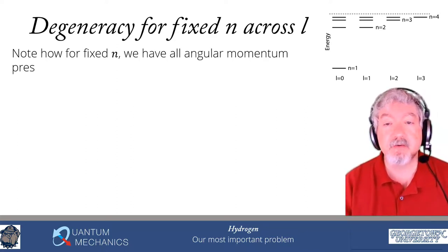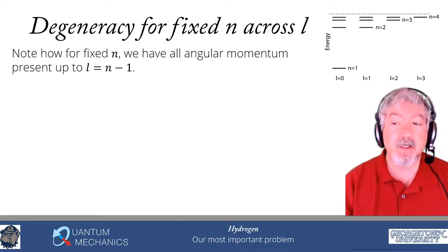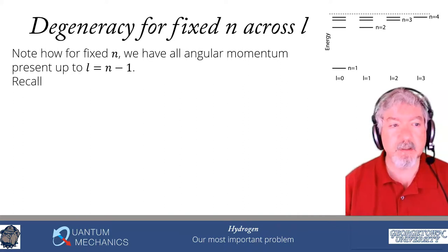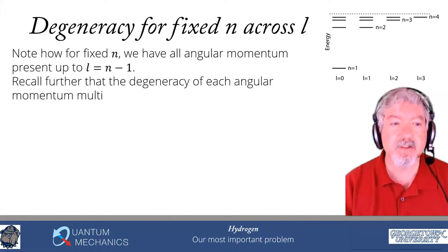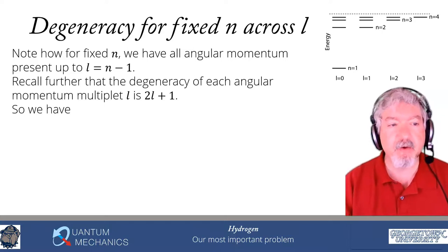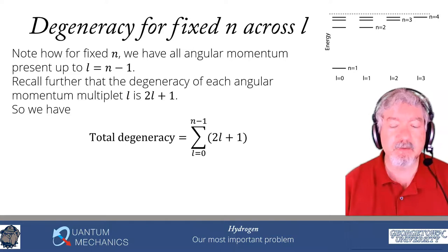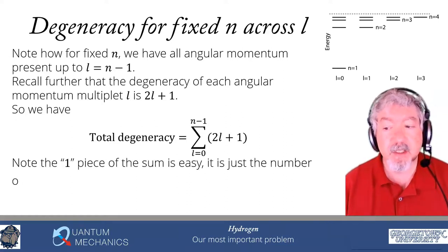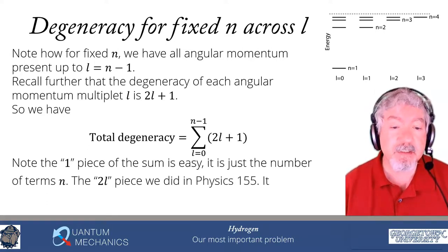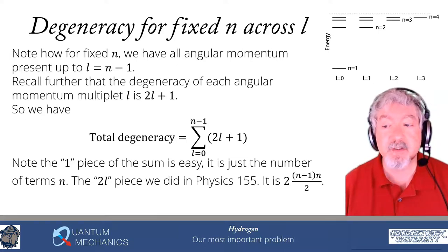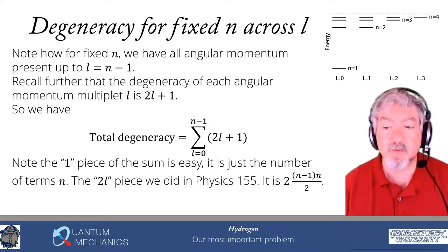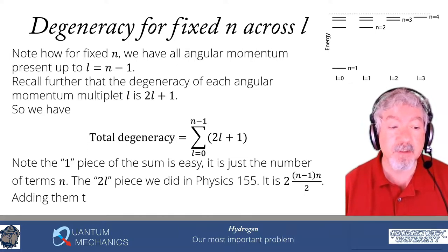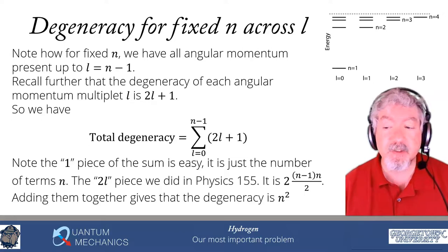Because all those states are degenerate, let's count how many states have the same energy for fixed n. We have all angular momenta up to l equals n minus 1. Since every angular momentum l has degeneracy 2l+1, we sum from l=0 to n-1 of (2l+1). The constant terms contribute n, and the 2l terms contribute n(n-1). Adding them gives n squared. So the degeneracy for each n is n squared in terms of the different angular momentum states.